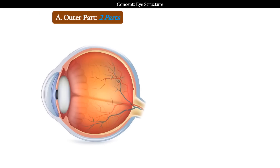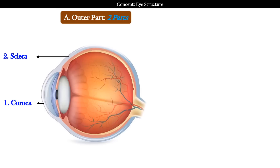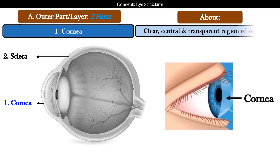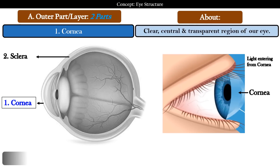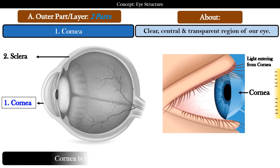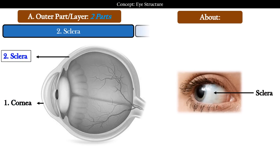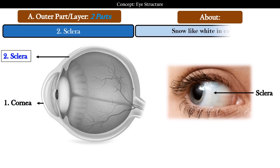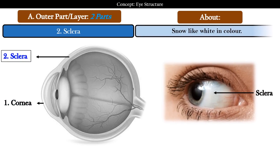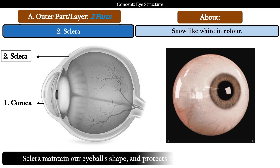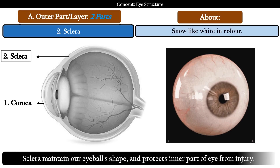The outer part is made up of two parts. One is cornea, whereas the second is sclera. Cornea is the clear, central, and transparent region of our eye — it is the part from where light enters into the eye. Whereas sclera is snow-like white in color and maintains our eyeball's shape and protects the inner part of the eye from injury.